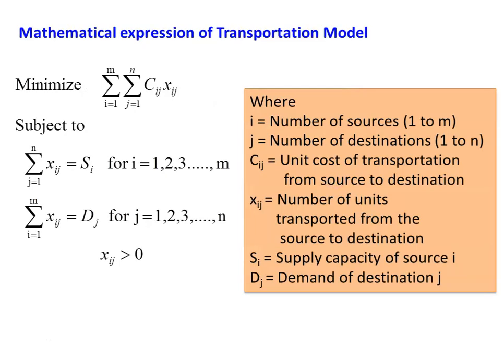Mathematically, the transportation model is expressed as: minimize sigma (i=1 to m, j=1 to n) of cij multiplied by xij. Here, cij is the unit cost of transporting one item from source i to destination j, and xij is the number of items transported from source i to destination j. The index i is the number of sources, varying from 1 to m, and j is the number of destinations, varying from 1 to n.